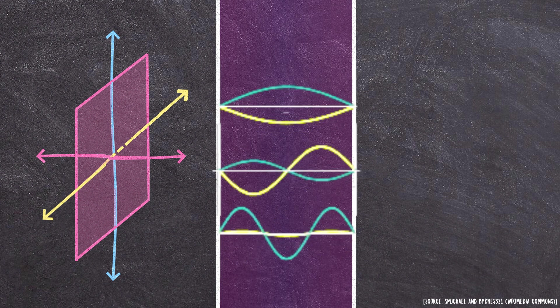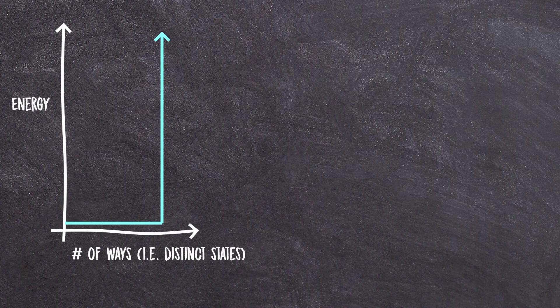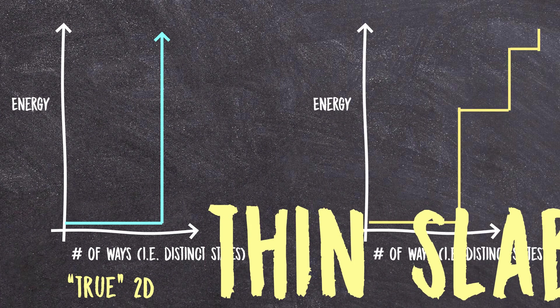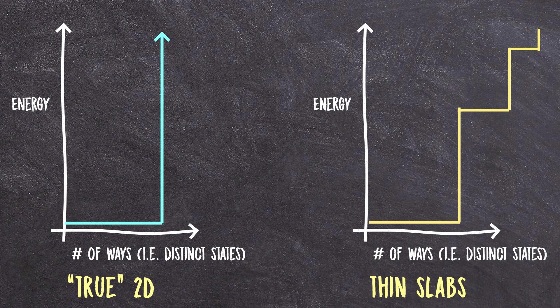But I mean, does it really? This is the density of states of a true, true two-dimensional universe. And this is what we might find in our thin slab. Sure, for some energies, they seem identical, but they do deviate at higher energies.